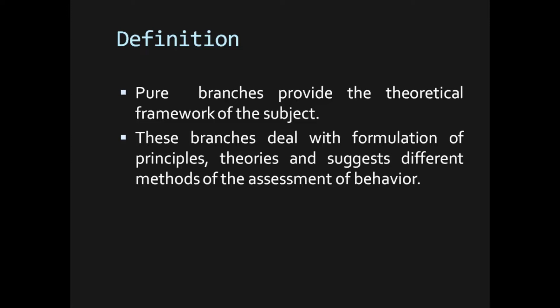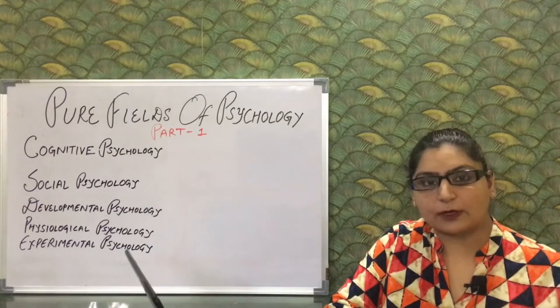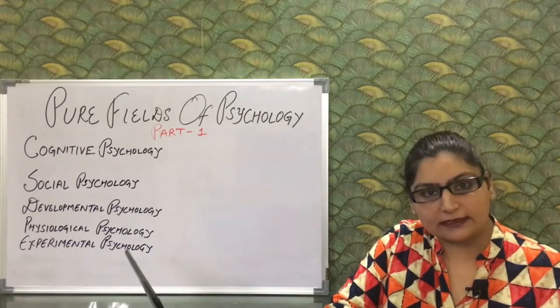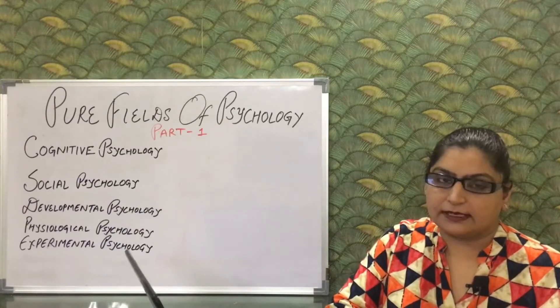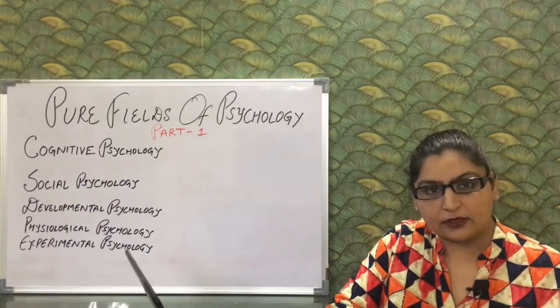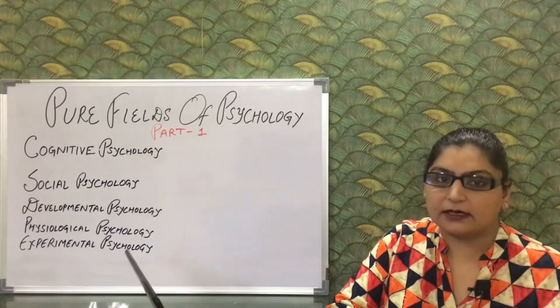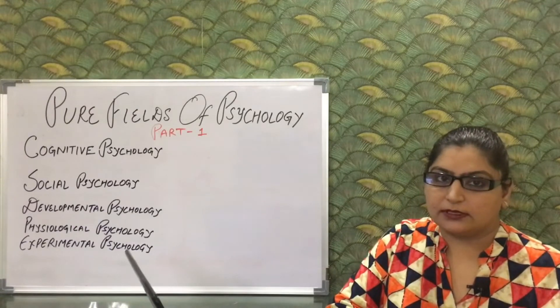Pure branches provide the theoretical framework of the subject. These branches deal with formulation of principles, theories, and suggest different methods of assessment of behavior. Pure psychology provides us with the theoretical framework of the subject — it provides or suggests different theories, methods, and techniques for the assessment, modification, analysis, and improvement of behavior.